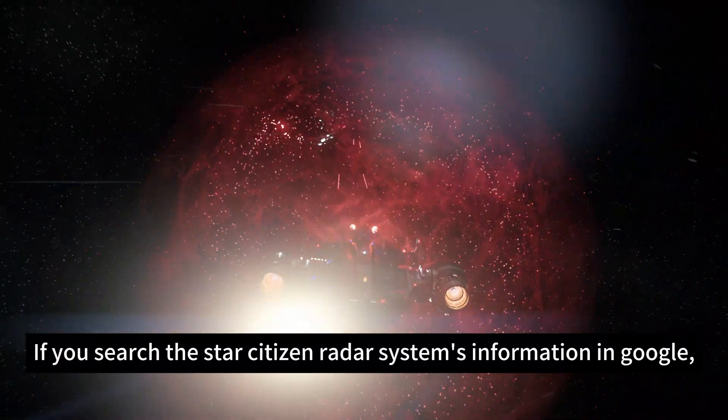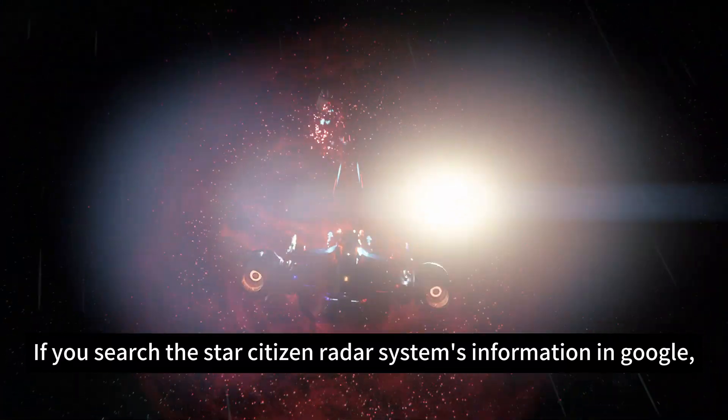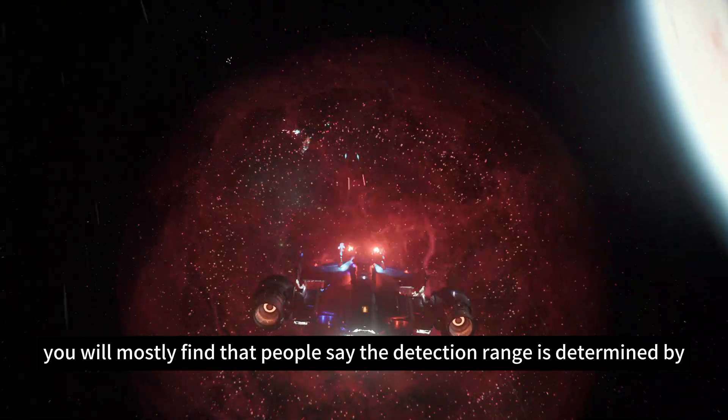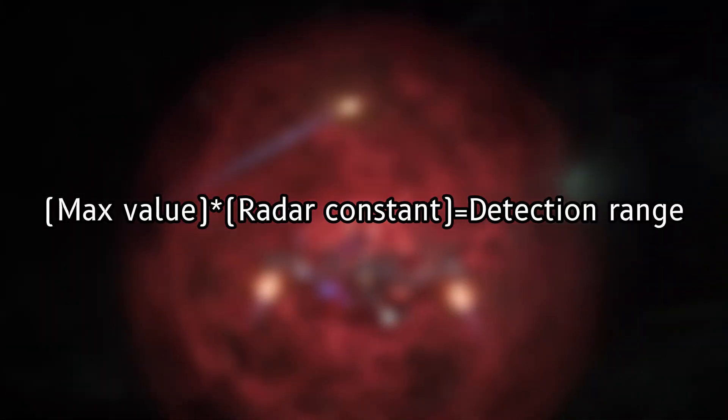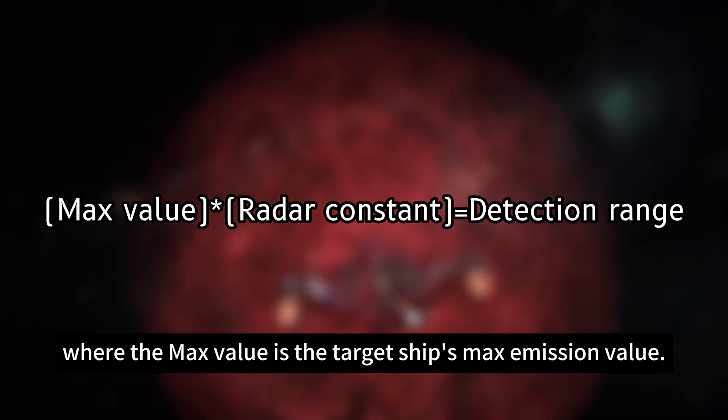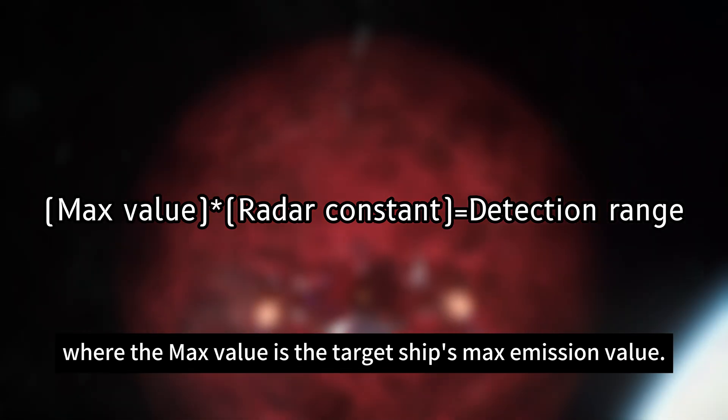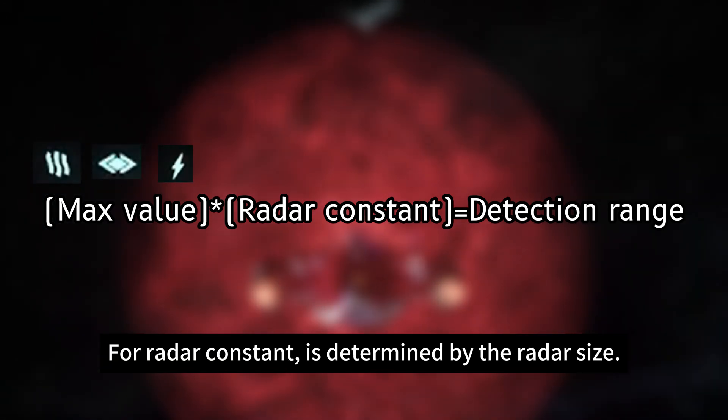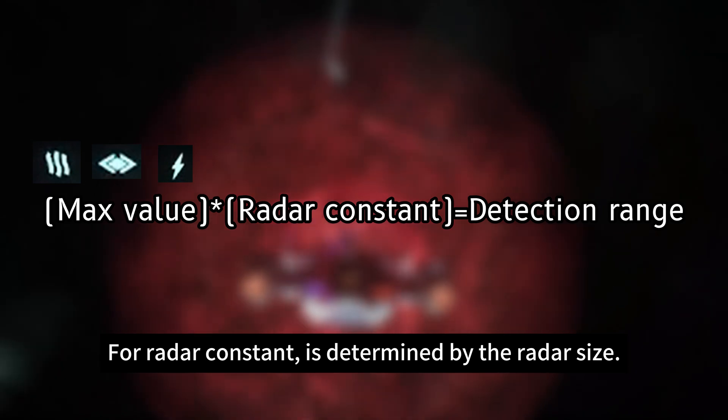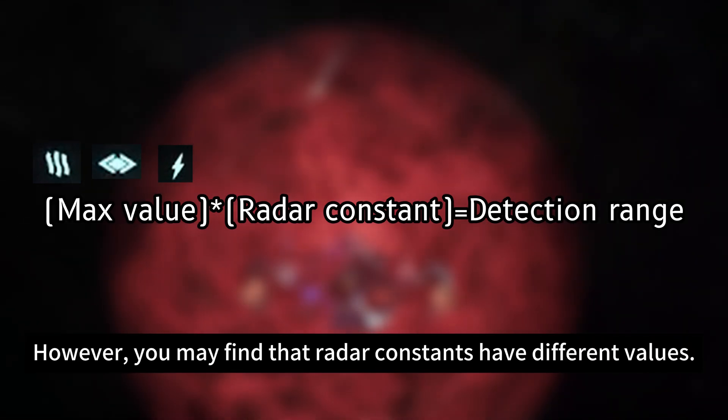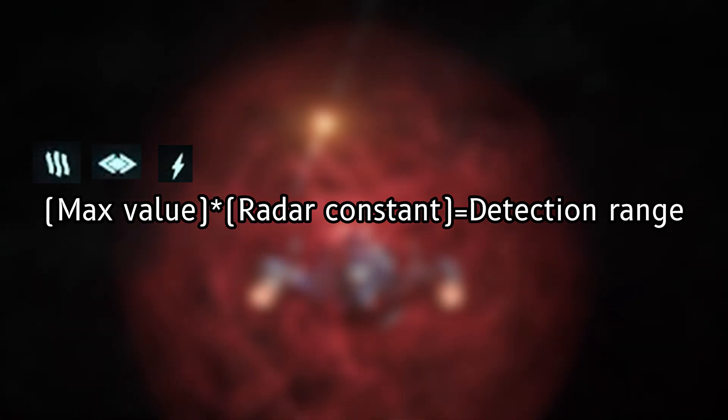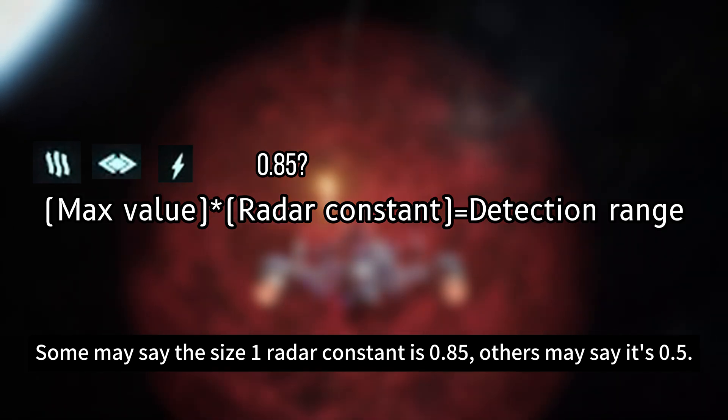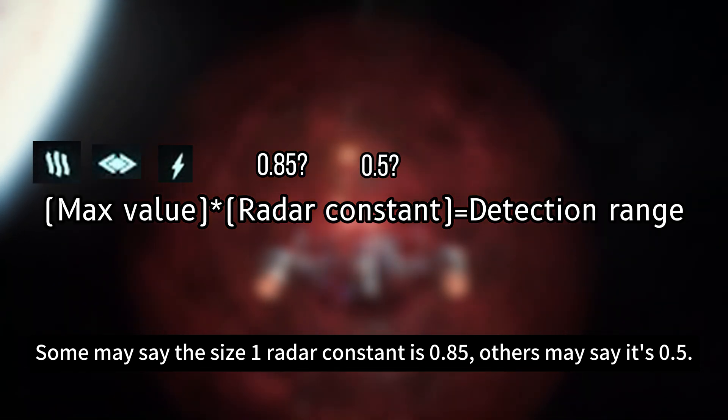If you search the Star Citizen radar systems information in Google, you will mostly find that people say the detection range is determined by max value divided by radar constant equals detection range, where the max value is the target ship's max emission value. It can be IR, CS, or EM. For radar constant, it's determined by the radar size. However, you may find that radar constants have different values. Some may say the size 1 radar constant is 0.85, others may say it's 0.5.